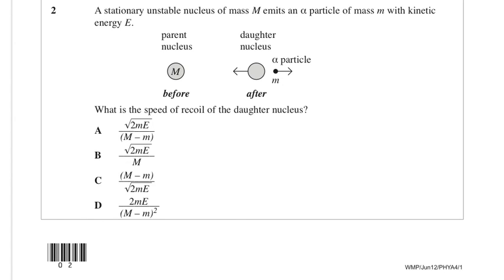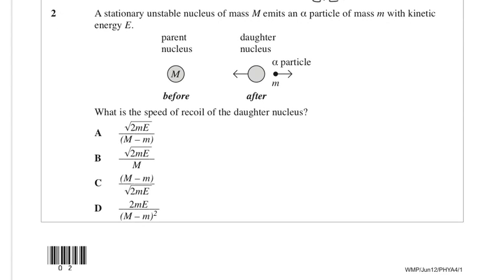So before it was stationary, so the total momentum is 0. What we need is an expression for the momentum of the alpha particle, because then we know the daughter nucleus would be in the opposite direction. We know the kinetic energy is E, and we can also calculate it by doing momentum squared over 2m. So that means momentum is square root of 2mE.